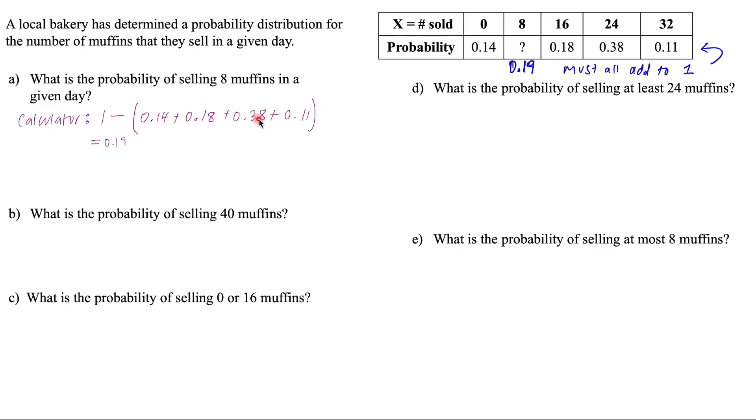So again add up all those values and then subtract it from one, or you can do it all at once into your calculator just like this. So now we can answer this question of what is the probability of selling eight muffins in a given day? Well, number of muffins sold is in the top of the table, so that's eight. And we just calculated that missing value.